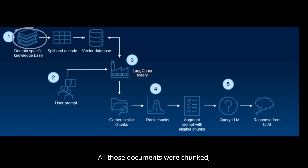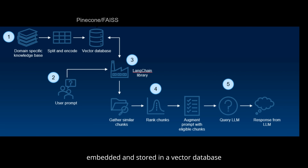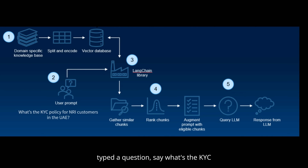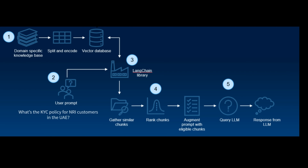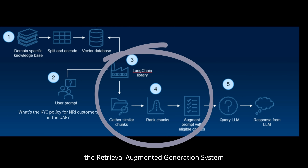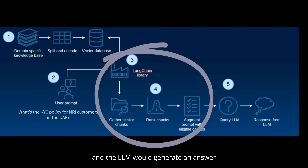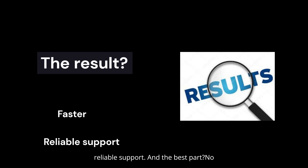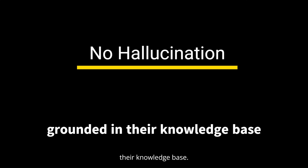All those documents were chunked, embedded, and stored in a vector database like Pinecone. When an agent typed a question — say, 'What's the KYC policy for NRI customers in the UAE?' — the RAG system would fetch the exact document snippet and the LLM would generate an answer based on that. The result: faster, reliable support. And the best part — no hallucinations, because it was grounded in their knowledge base.